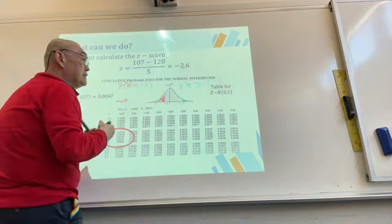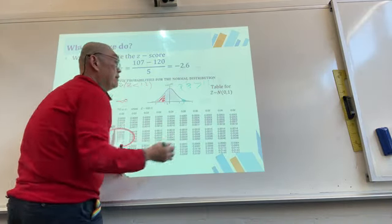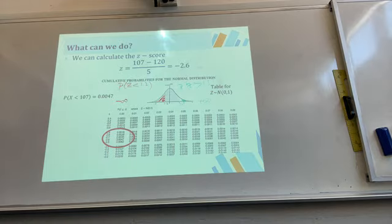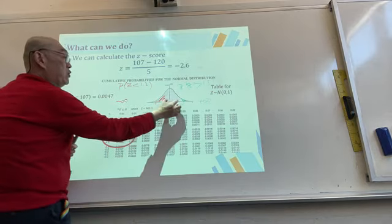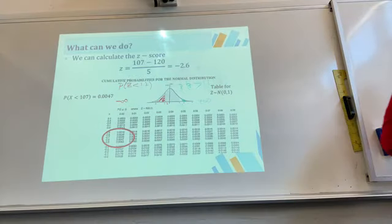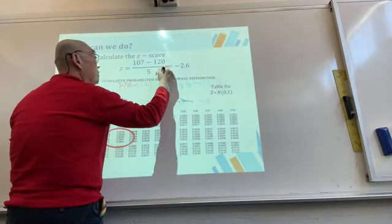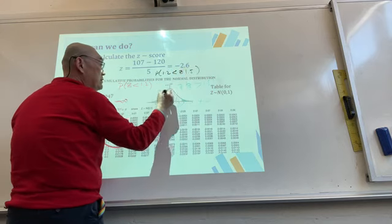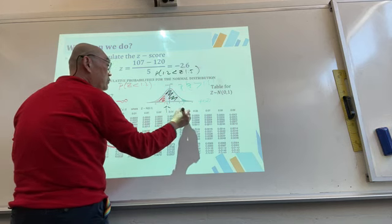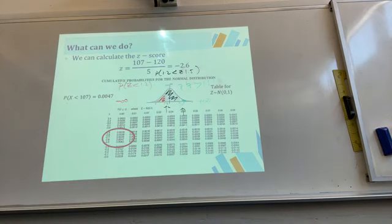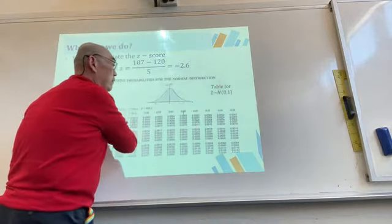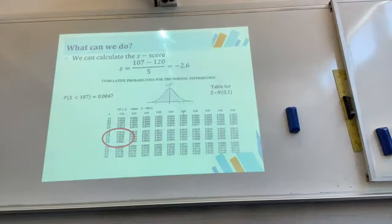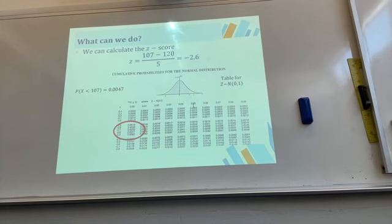Always make sure you know what your lower and upper boundaries are. For P(Z < 1.2), the lower boundary is negative infinity. For P(Z > 1.5), the upper boundary is positive infinity. For a region between two values, both boundaries are finite. Now for our question, we want P(X < 107).